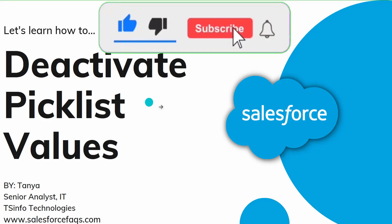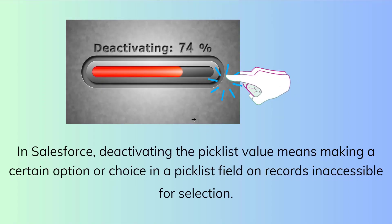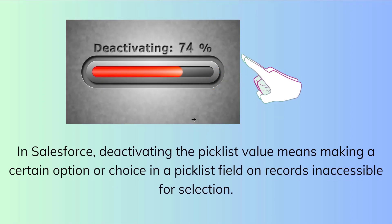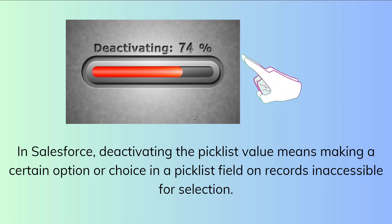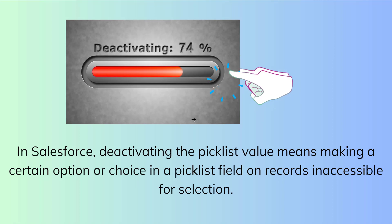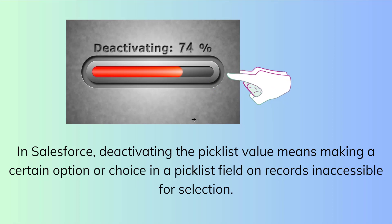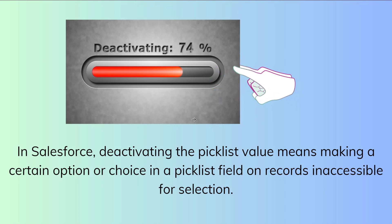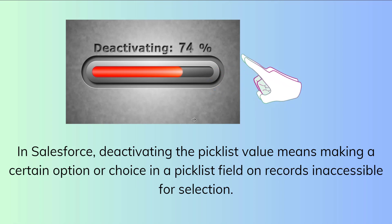Let's proceed and first understand what we mean by deactivating a picklist value in Salesforce. Deactivating a picklist value means making certain options or choices from the picklist field on a record inaccessible for selection — basically you are not able to select that option anymore. We can effectively make a picklist value unavailable to users when they are filling out or modifying a record by deactivating it.